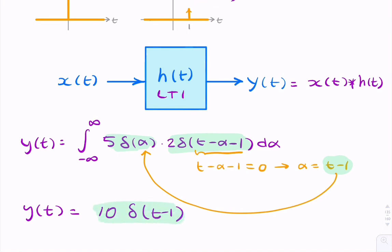So it took a couple of minutes. We could have done this immediately using the scaling property, but it's possible by carrying out a convolutional integration and then using the sifting property of the Dirac function to arrive at the same result.